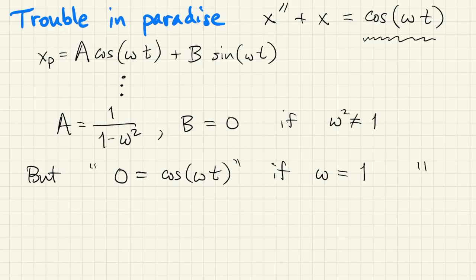That's not possible in general. So this is the wrong xp. The reason is that for this equation at omega equals one, the xp that I've written here is actually a homogeneous solution. So it can't serve as the particular solution of the forcing function present.